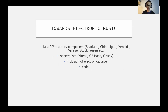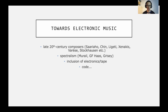Moving past Messiaen, I started looking at later 20th century composers such as Kaija Saariaho, the Finnish composer, Unsuk Chin, the Korean composer, György Ligeti, Iannis Xenakis, Varèse, and Karlheinz Stockhausen — all quite well-known late 20th century composers. Kaija and Unsuk are still alive, thank goodness. Something that really interested me is spectralism, which plays a lot with the harmonic spectrum and sound as a musical object. All of these composers have included electronics in their work, and I thought it was about time I did too.